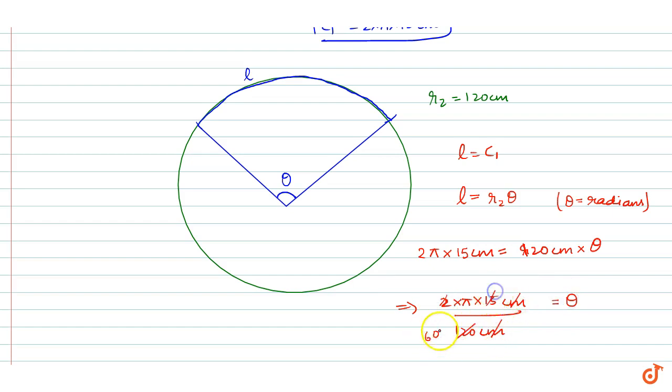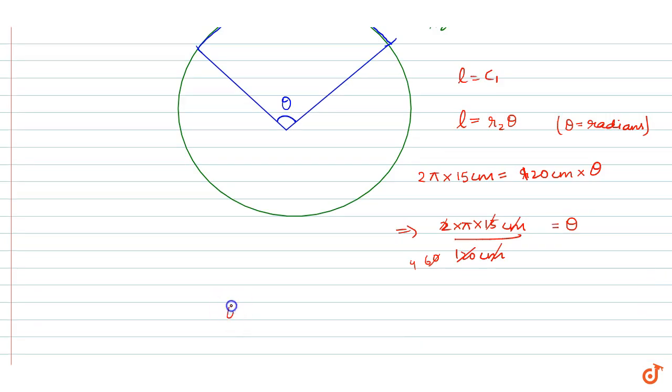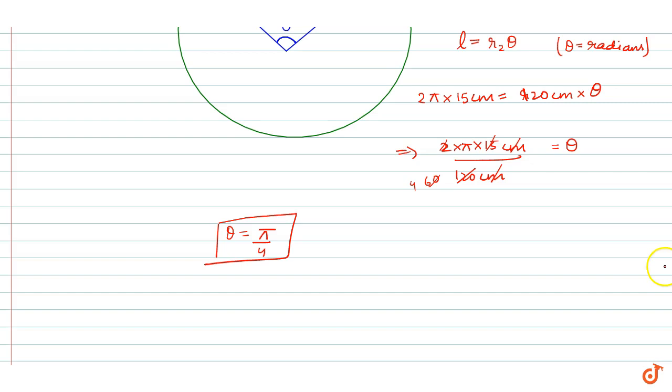So theta comes out to be π/4 radians. Theta can be π/4, or we can also express it in degrees.